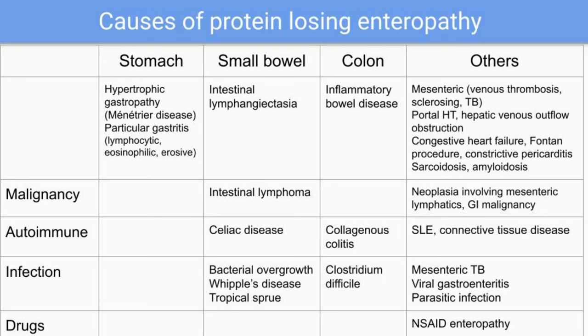Malignancy involving mesenteric lymphatics and GI malignancy can also be causes. Autoimmune causes include SLE and connective tissue disease. Infection includes tuberculosis, viral, and parasitic infections.